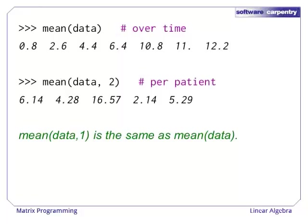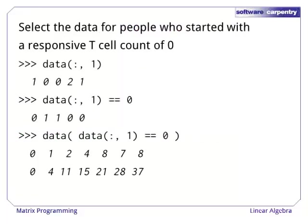The mean along axis 2 gives us the average T-cell count per patient across all times, which can be useful if we want to normalize our data. It might be even more interesting to look at what happened to people who started with no responsive T-cell count at all. The first step is to select the first column of data, i.e. the initial T-cell counts for each patient. If we compare these to 0, we get a Boolean array with true for each row that meets our criteria. If we use this to index the original array, we get the two rows for which the count at time 0 is 0.